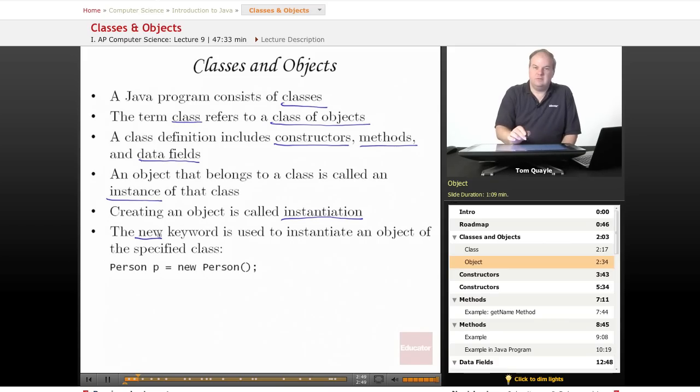The new keyword, which we've seen in previous lessons but not really talked about in any detail, is how you instantiate an object of the specified class. So if I have a class called person and I declare a variable p as a variable of type person, then I use the new keyword and the name of the class with parentheses. The new keyword actually does the work of creating an object of type person.